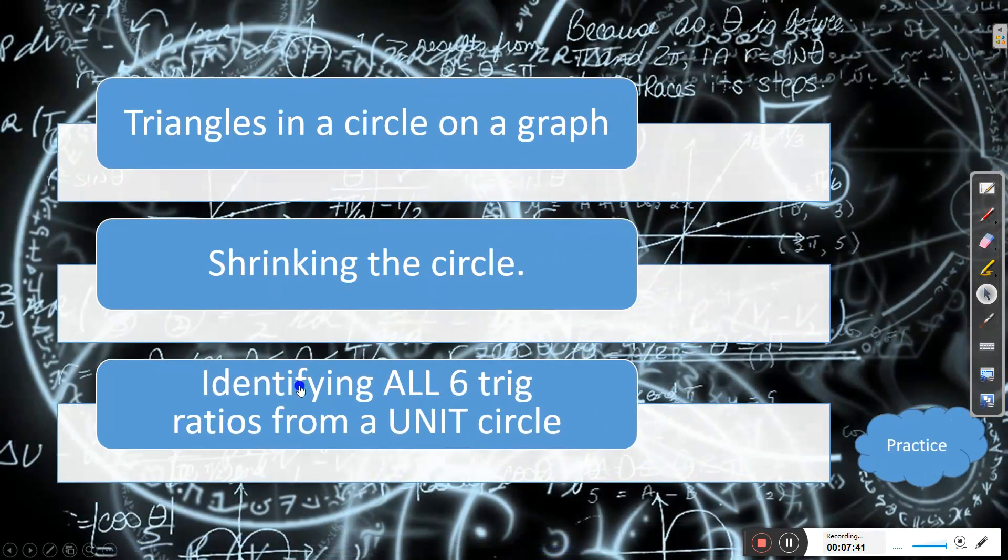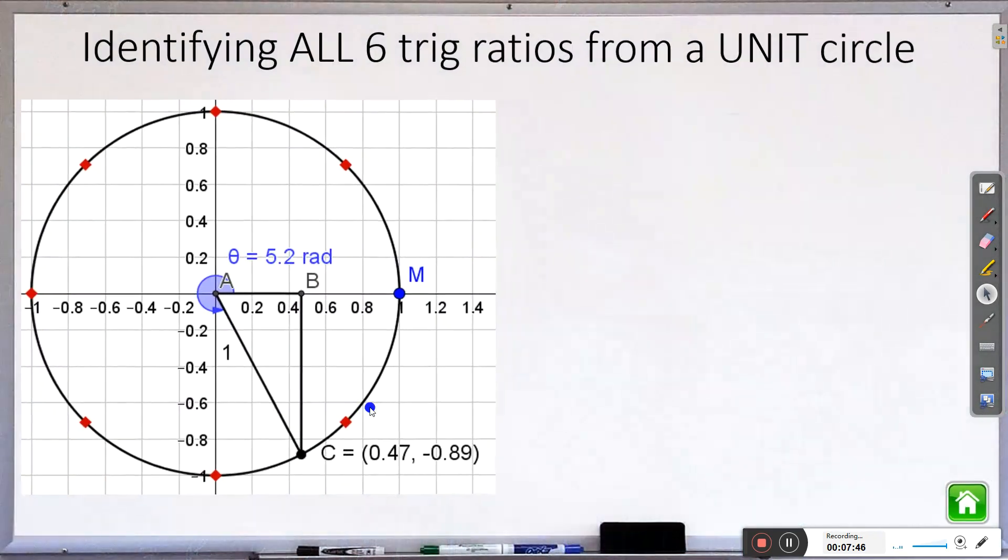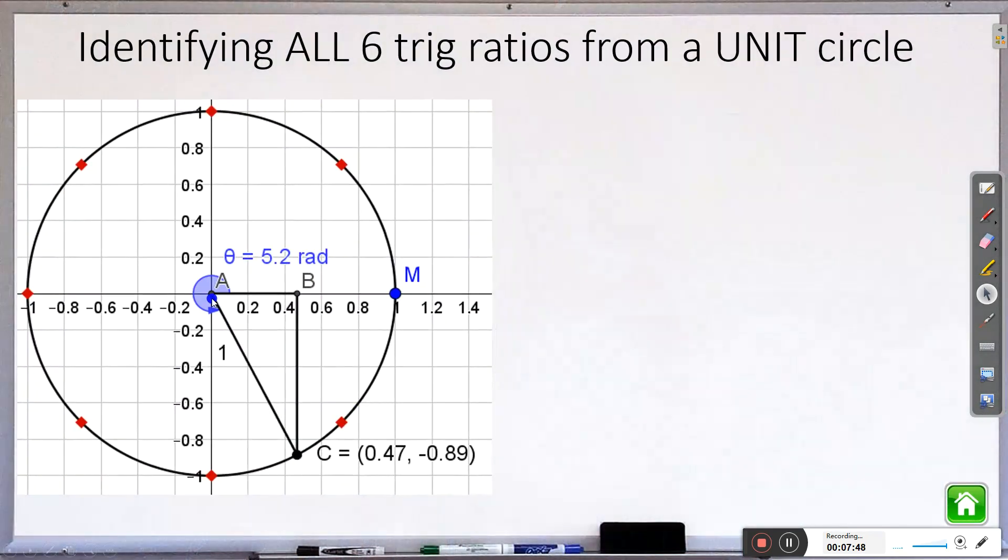Let's actually identify all 6 trig ratios from a unit circle now. So you can see this circle now has a radius of only 1. It goes positive 1, positive 1 negative 1, negative 1 all the way around. And so I've identified 1 angle 5.2 radians. We're going to identify sine, cosine, and tangent. So the first 3 here are really easy.